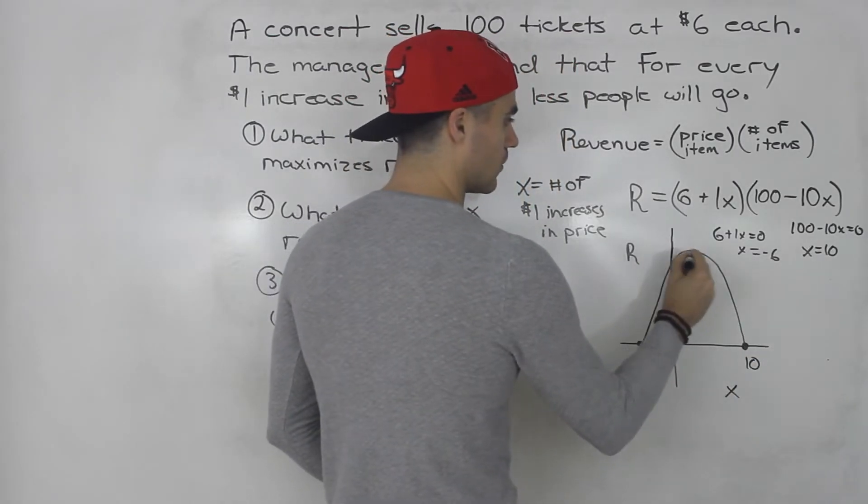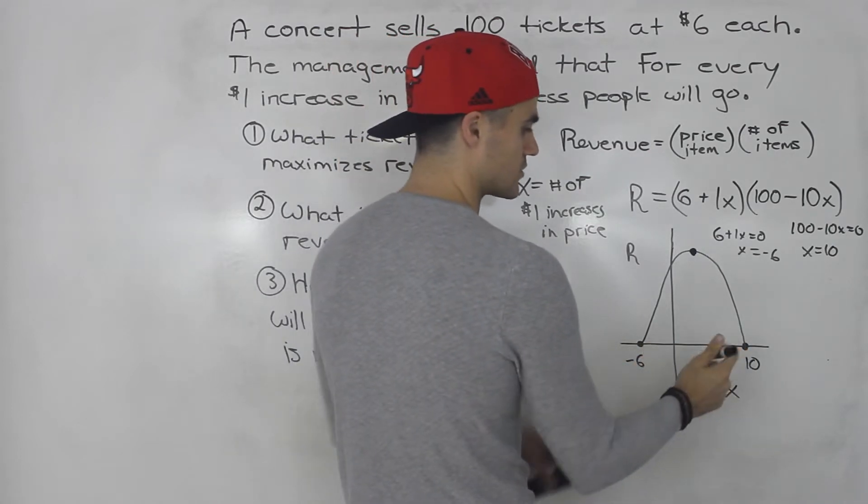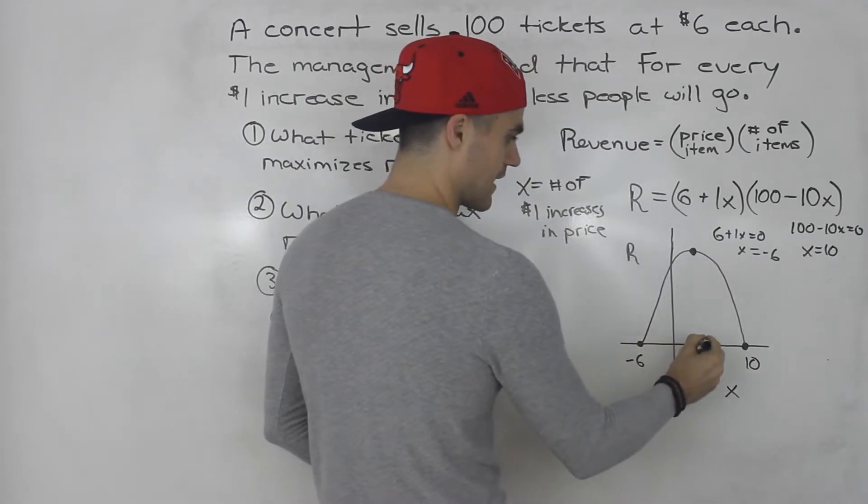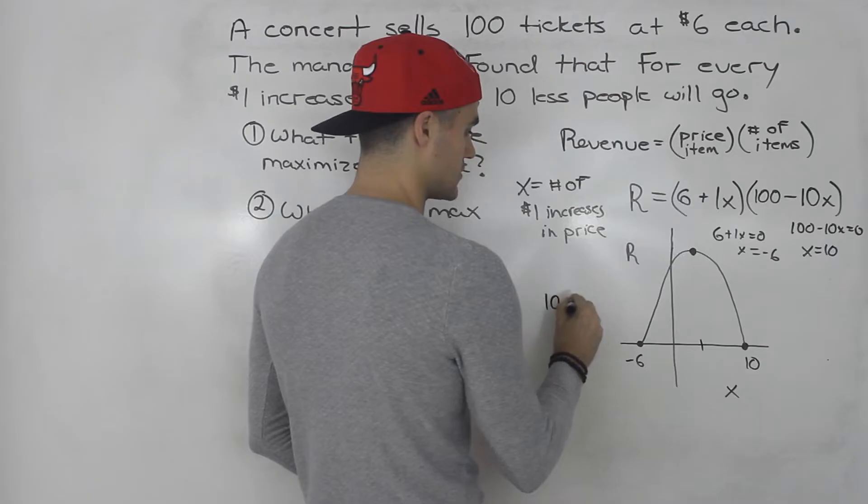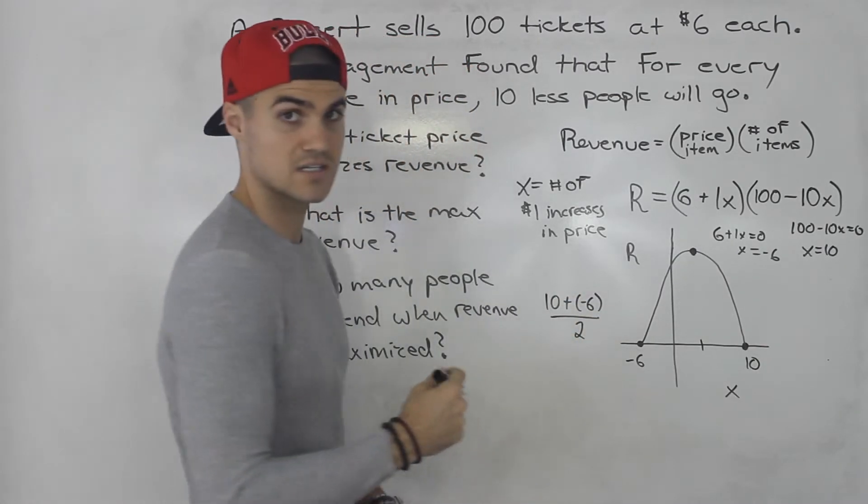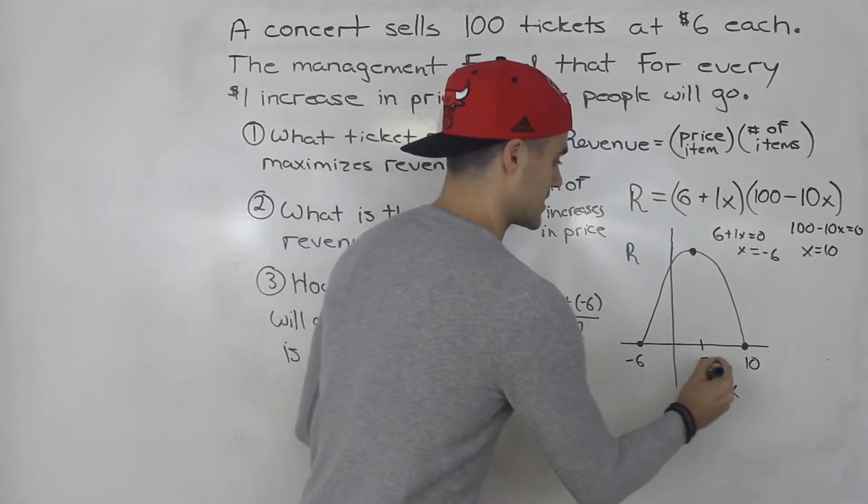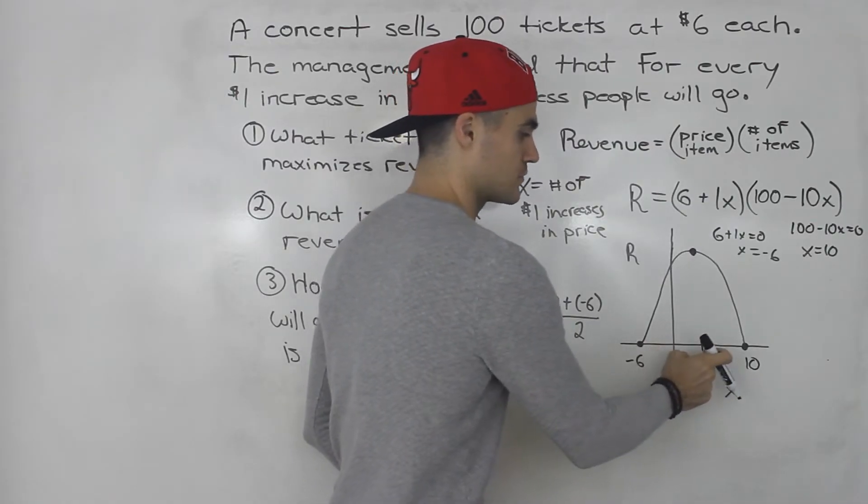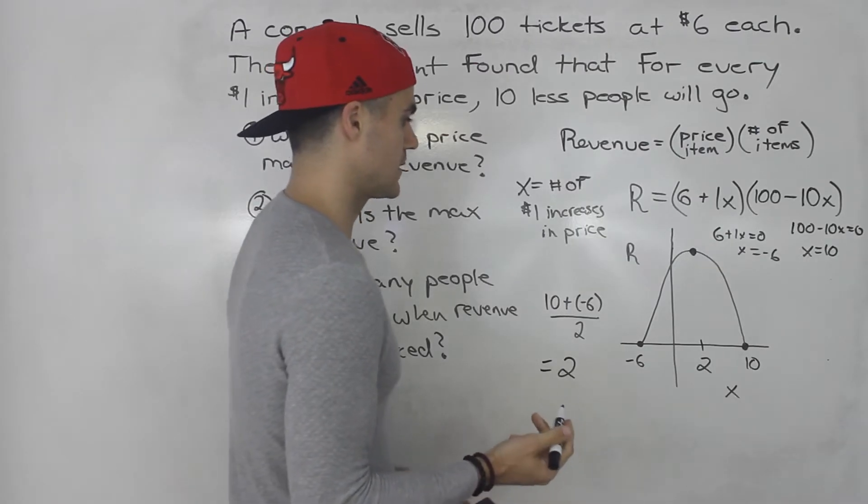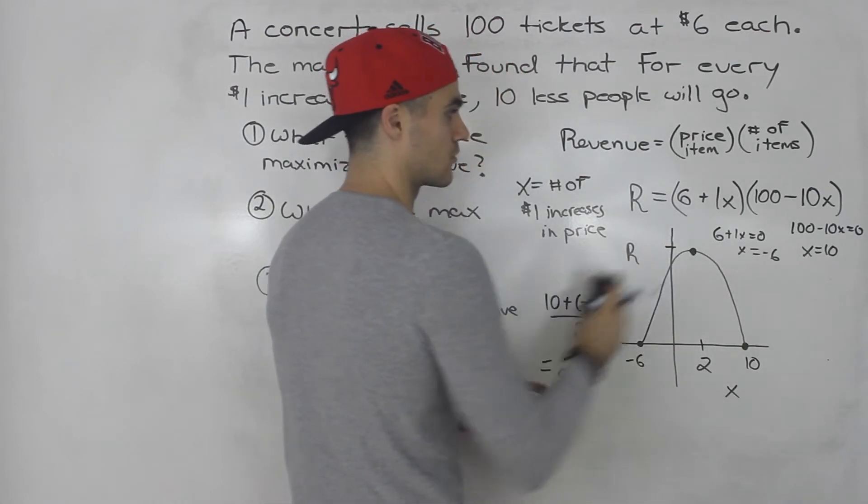We could figure out what this vertex is here, that max value, because we have the intercepts and we have the equation. To find the x value of the vertex, we would just add the two intercepts and divide by 2. So 10 plus negative 6 is 4, divided by 2 gives us 2. That makes sense because from negative 6 to 2 is a distance of 8, from 2 to 10 is also 8.